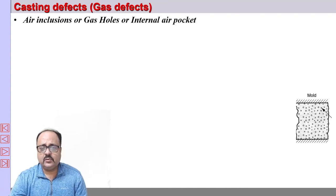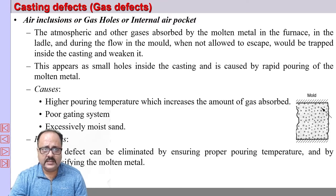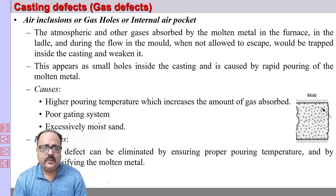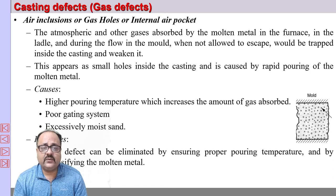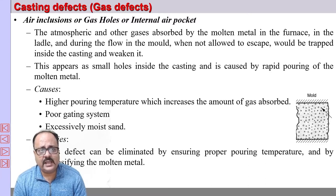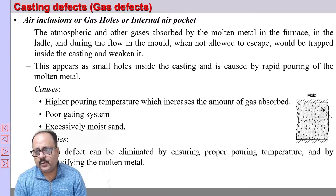Air inclusions: this also happens due to gas. Molten metal entraps gases, and if these gases do not find a passage to escape, they become entrapped inside the casting, resulting in a defect called air inclusions, gas holes, or internal air pockets.